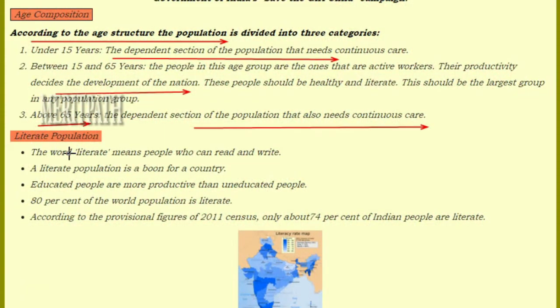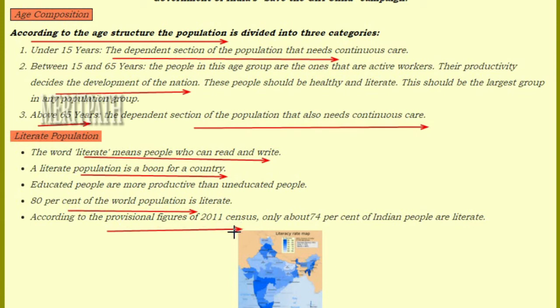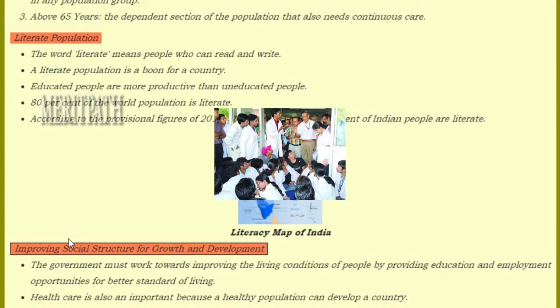Literacy: The word literate means people who can read and write. A literate population is a boon for a country. 80% of the world population is literate. According to the provisional figures of the 2011 census, only 74% of India's population are literate. The government must work towards improving the living conditions of people by providing education and employment. Healthcare is also an important factor as a healthy population can develop a country.